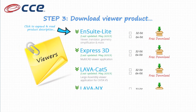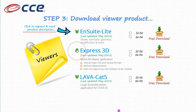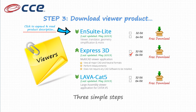To download your free viewer software, click on the arrows to expand and read the description of any product available for download. Once you've chosen a product, simply click on which operating system — 32 or 64-bit — and then click free download. It's three simple steps for downloading your free software.